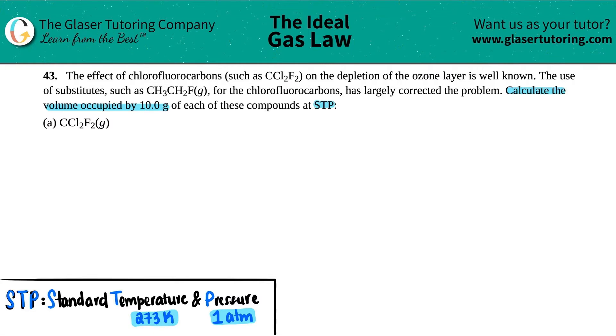We have letter A. In this case, we have 10.0 grams of CCl2F2, and we need to find out what that volume is. Let's list out everything that we got. We want to calculate the volume, so V equals question mark.